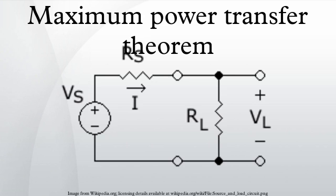The theorem can be extended to alternating current circuits that include reactance, and states that maximum power transfer occurs when the load impedance is equal to the complex conjugate of the source impedance.